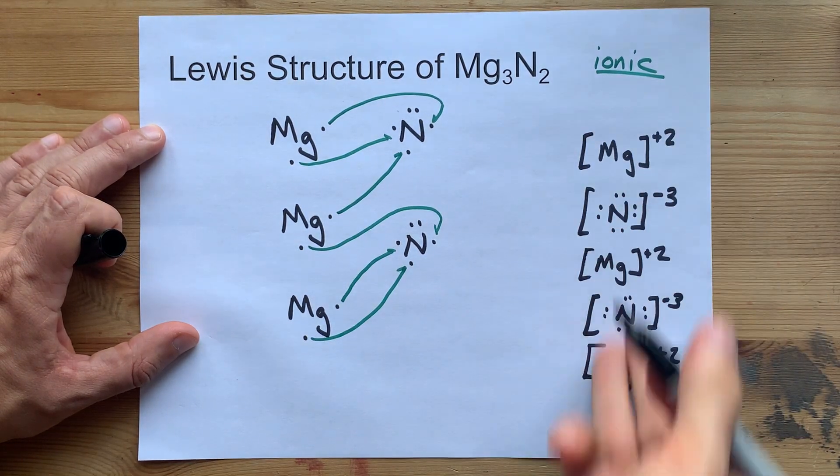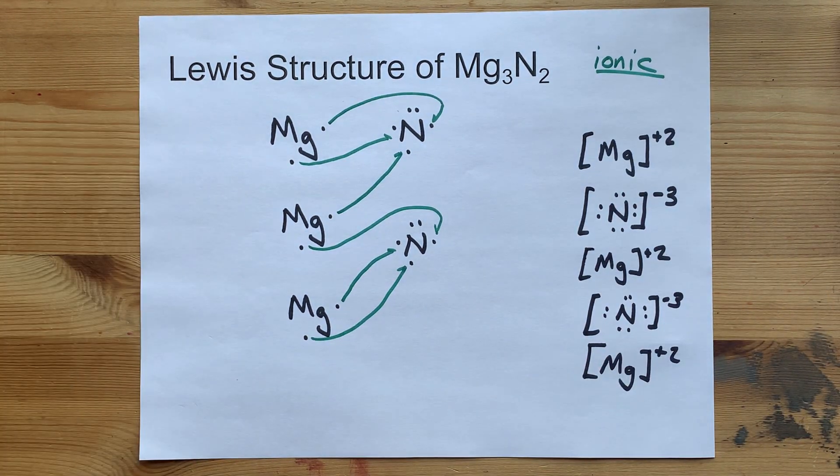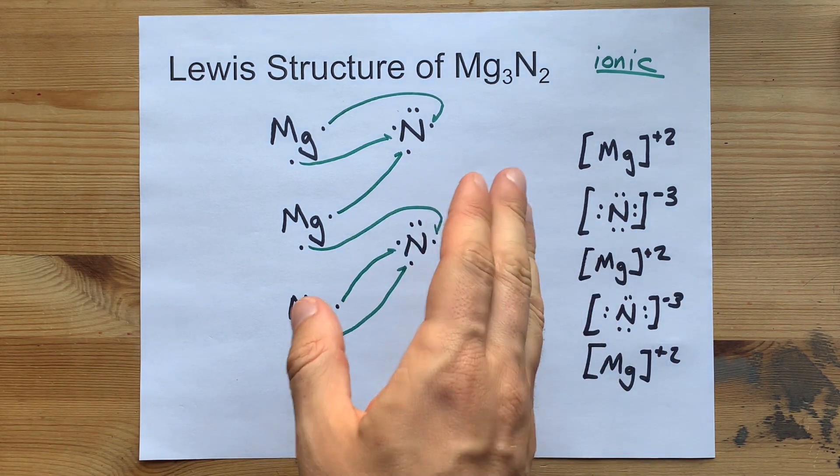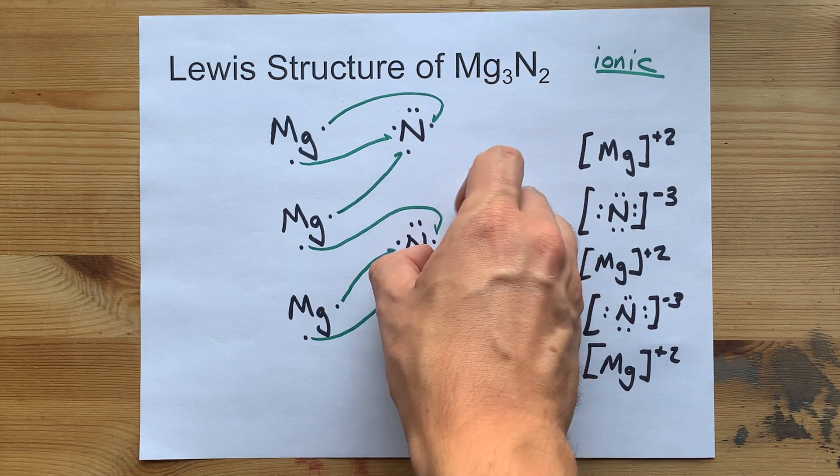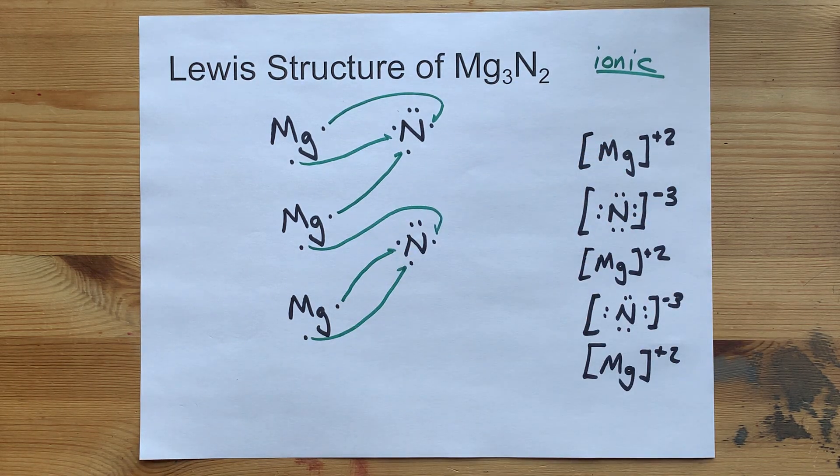That's your completed Lewis structure for Mg₃N₂. Shouldn't have been a surprise. The formula told you you were going to need 3 MGs and 2 Ns to make this work.